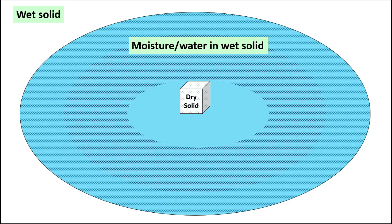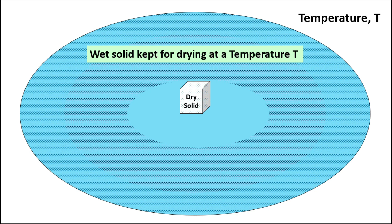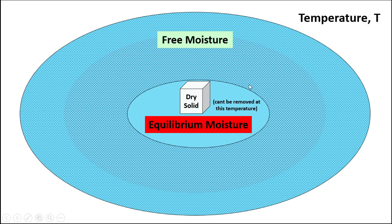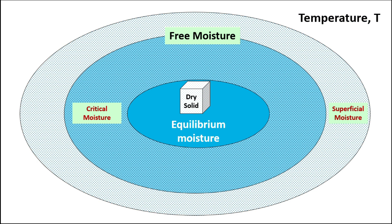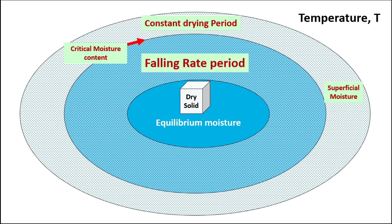To understand the drying phenomena, the wet solid can be schematically represented as moisture content and dry solid. When the wet solid is kept for drying at a specific temperature, the water moves to the air. The inner circle in the diagram represents the equilibrium moisture content — the water level that cannot be removed further at the given drying temperature. The remaining moisture beyond equilibrium moisture is termed free moisture. This free moisture can be further divided into two regions: the superficial moisture region, where the drying rate is constant, and the critical moisture region, where the drying rate starts decreasing — termed the falling rate period.